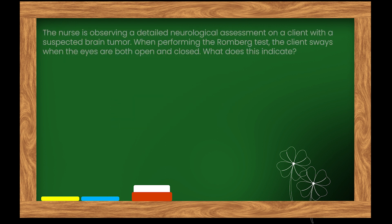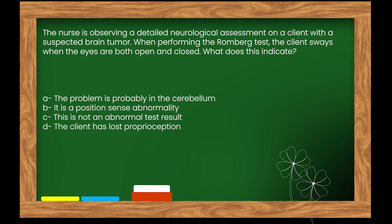Here is our next question. The nurse is observing a detailed neurological assessment on a client with a suspected brain tumor. When performing the Romberg test, the client sways when the eyes are both open and closed. What does this indicate? Options: A. The problem is probably in the cerebellum. B. It is a position sense abnormality. C. This is not an abnormal test result. D. The client has lost proprioception.